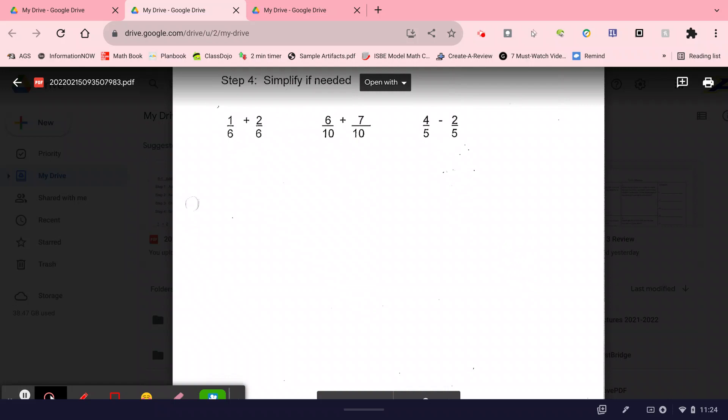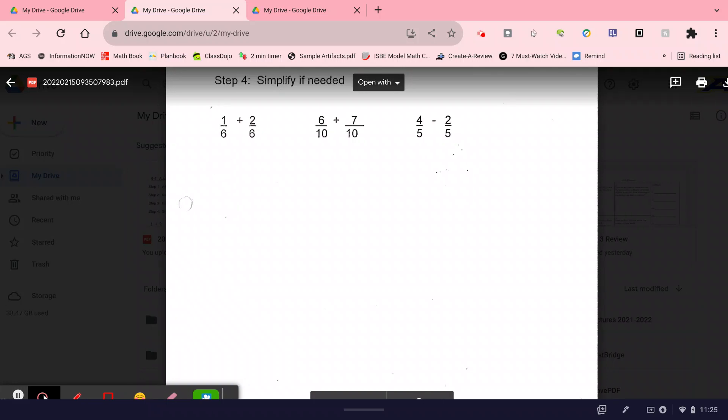Find where you see 1/6 plus 2/6. What is my rule for adding fractions? The bottom numbers have to be the same. If the bottom numbers are the same, we just add the top. So 1/6 plus 2/6, what's 1 plus 2? 3. So we would have 3/6. Is that a good final answer? No. I divide both of these by 3 and I would get 1/2 final answer.